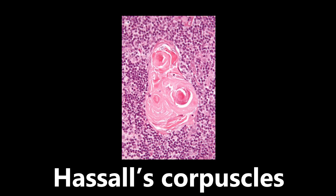This image is an example of Hassall's corpuscles. These are concentric masses consisting of one or more granular cells within a capsule of epithelioid cells. We see these granular cells in the middle surrounded by a capsule of epithelioid cells. These are so important because they can be used to identify the thymus — nothing else has these Hassall's corpuscles. So if you see these, you know that you're in the thymus.